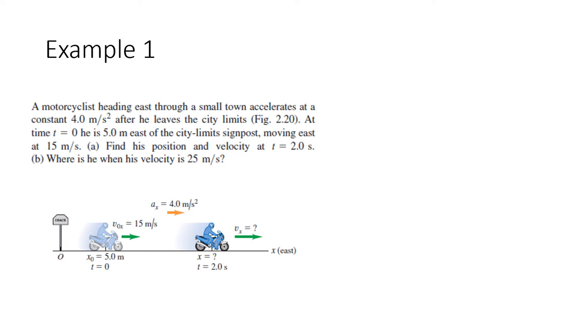So this is an example for motion with constant acceleration. A motorcyclist heading east through a small town accelerates at a constant 4 meters per second squared after he leaves the city limits.